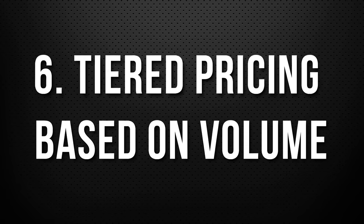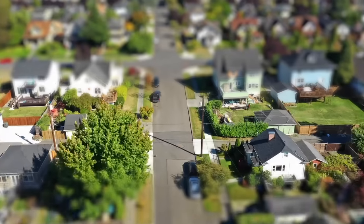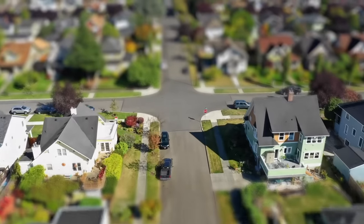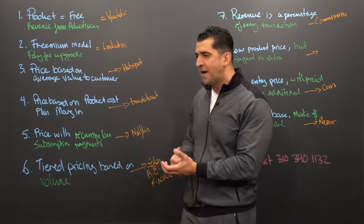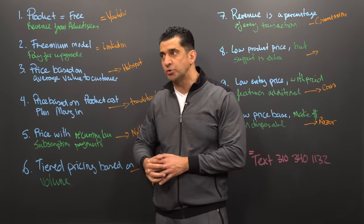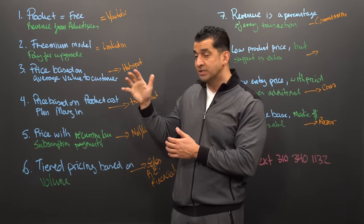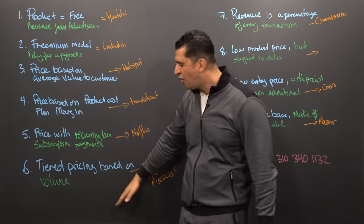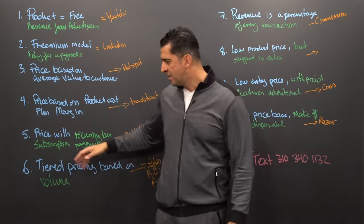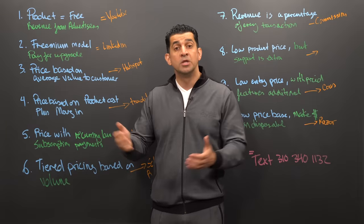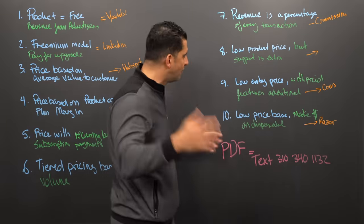Number six is tiered pricing based on volume. In real estate, how much you buy — the more volume you buy, the less they charge you. If you're getting a commission contract with an insurance company, if you sell this many policies, they give you this much, but if you sell more, they give you more. It's all volume-based. The more you do, the more leverage you have for negotiation, and the less the cost is going to be to the customer because you're banking on volume.